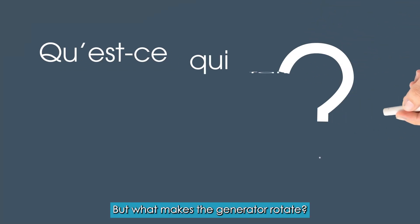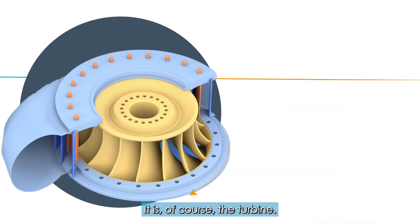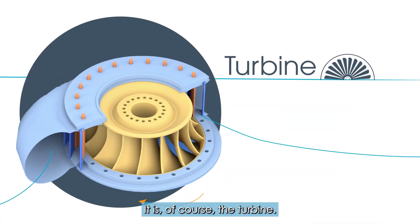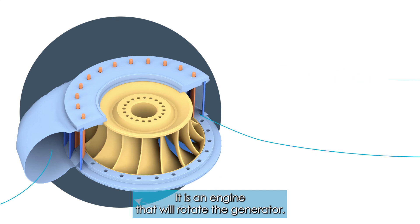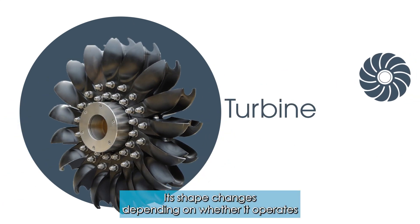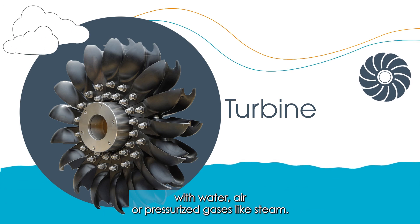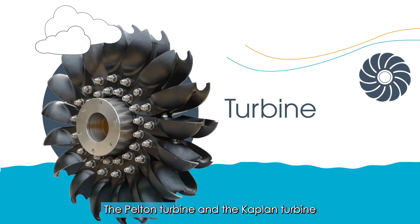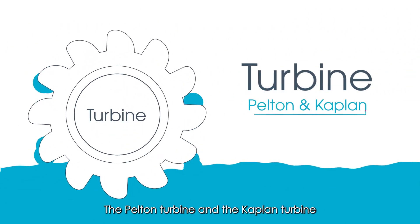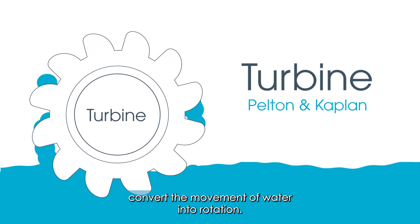But what makes the generator rotate? It is, of course, the turbine. It is an engine that will rotate the generator. Its shape changes depending on whether it operates with water, air, or pressurised gases like steam. The Pelton turbine and the Kaplan turbine convert the movement of water into rotation.